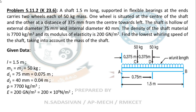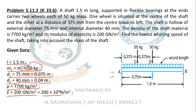List down the given data. Total length of the shaft is 1.5 m. Two masses, each 50 kg, are placed on the beam. External diameter D1 = 75 mm (0.075 m), internal diameter D2 = 40 mm (0.04 m). Density of shaft material is 7700 kg/m³. Young's modulus is 200 GN/m² = 200 × 10⁹ N/m².